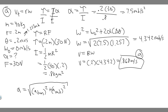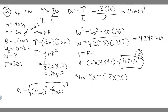Let's find the tangential acceleration first. The formula is a_T = Rα, similar to how V_T = Rω. We know both values, so: a_T = 0.2 × 7.5 = 1.5 meters per second squared. Note that alpha is still 7.5 rad/s² — it doesn't change with position since it's constant.